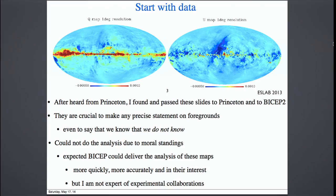Let me start with data, because data is very important. After I heard from Princeton that they were checking the foreground, I found these maps on Q and U, and passed these slides both to the Princeton people and to the BICEP2 people. I think they were crucial to make any precise statements on the foreground, even at the level to say that we don't know what the foregrounds are, which I think is the current statement.